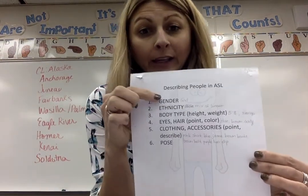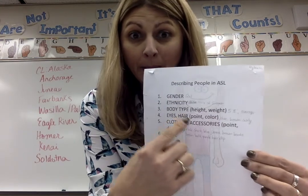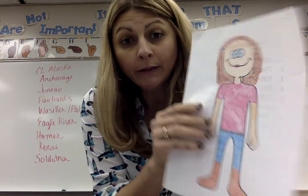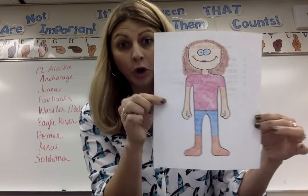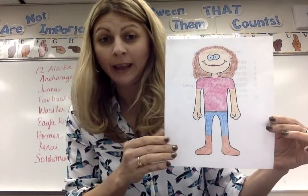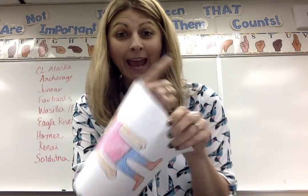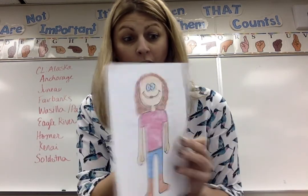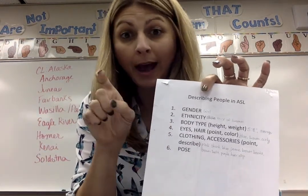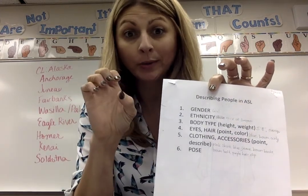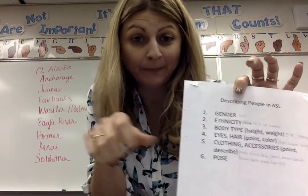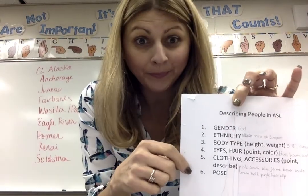You can write it kind of like a cheat sheet for yourself. What I'm looking for is: show me your picture and then sign an accurate description of this picture using the correct order. You do not have to pose at the end unless you want to. So here's my example.